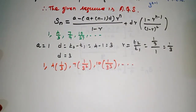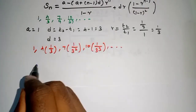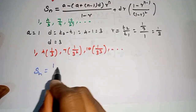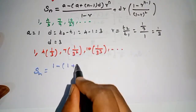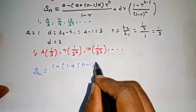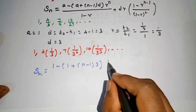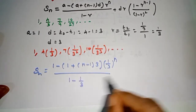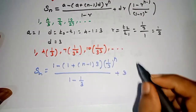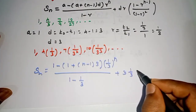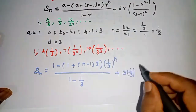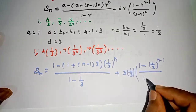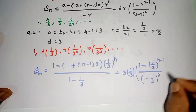Substituting into the formula: Sn = [1 - (1 + (n-1)·3)·(1/3)^n] / (1 - 1/3) + [3·(1/3)·(1 - (1/3)^(n-1))] / (1 - 1/3)^2. So a = 1, d = 3, r = 1/3 are substituted throughout the formula.